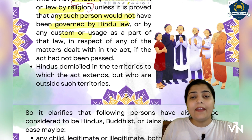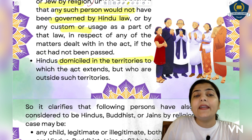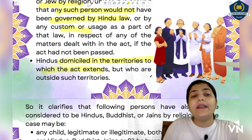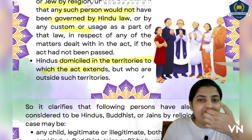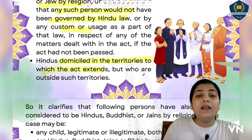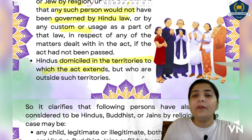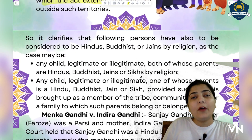The fourth category is: Hindus domiciled in the territories to which the act extends but who are outside such territories. Even though they are currently outside those territories, if they were present there the law would be applicable to them — so these people are also placed in the Hindu category. I hope you have now understood Section 2 in detail.